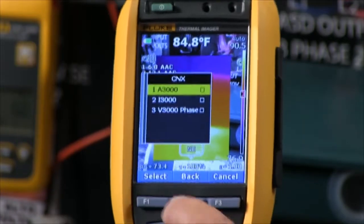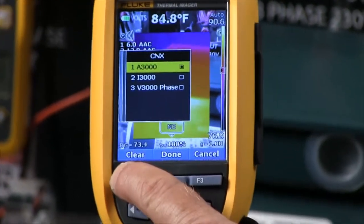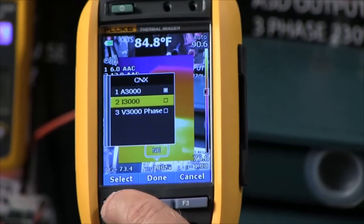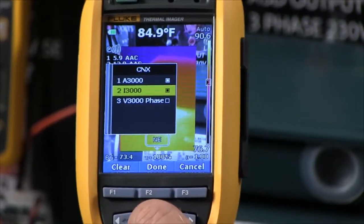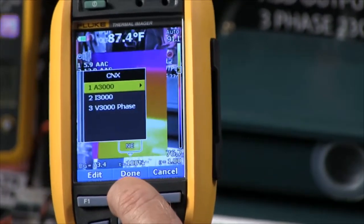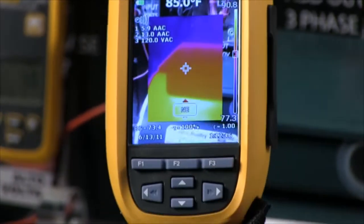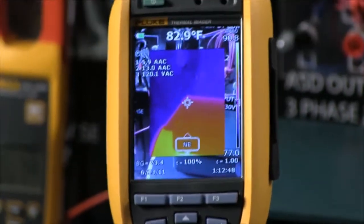So by selecting the ones here, I'm going to select the input current module, the current module that's at the output of the drive, and then the voltage on the input. Once they're selected, I can then hit that key, say I'm all finished.